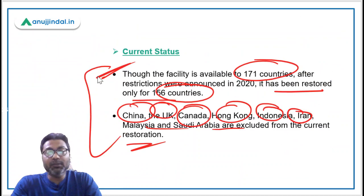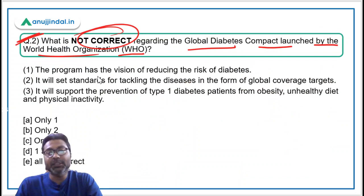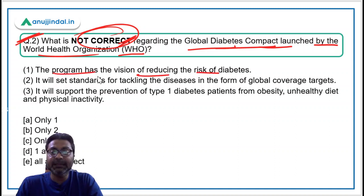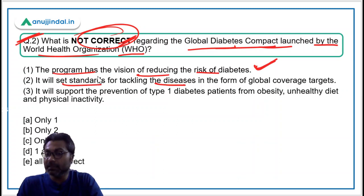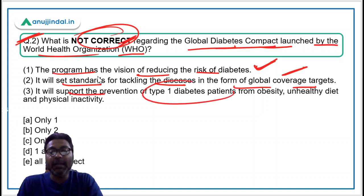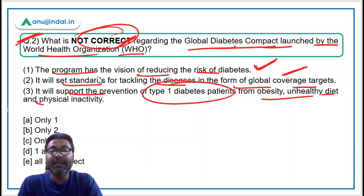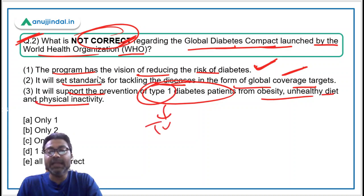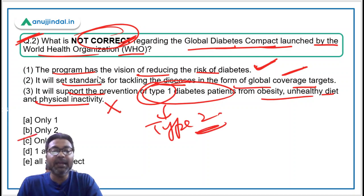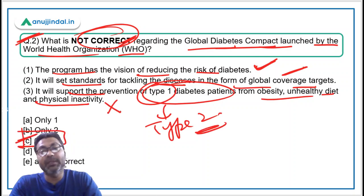Now for the answer to question two. The program has the vision of reducing the risk of diabetes — correct. It will set standards for tackling the disease in the form of global coverage targets — also correct. However, the statement that it will support prevention of type 1 diabetes patients from obesity, unhealthy diet, and physical inactivity is incorrect — it should be type 2, not type 1. Therefore option C is the correct answer.